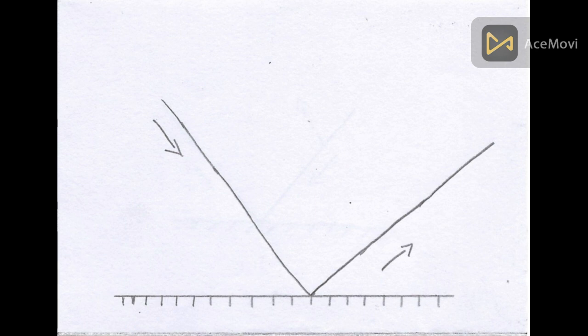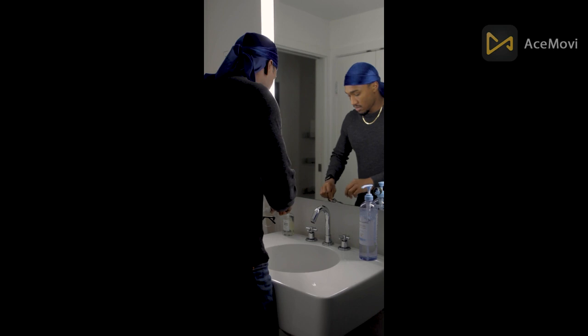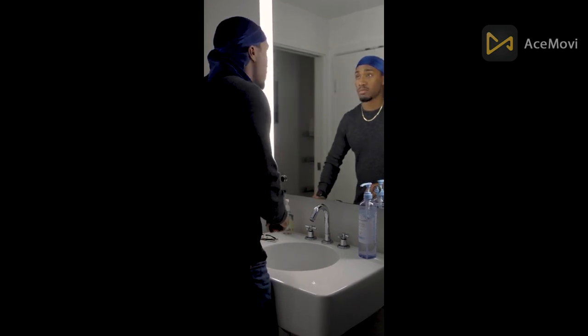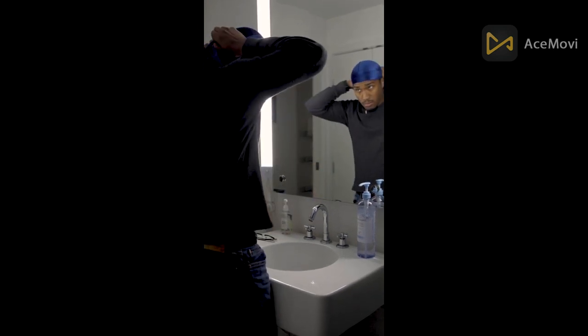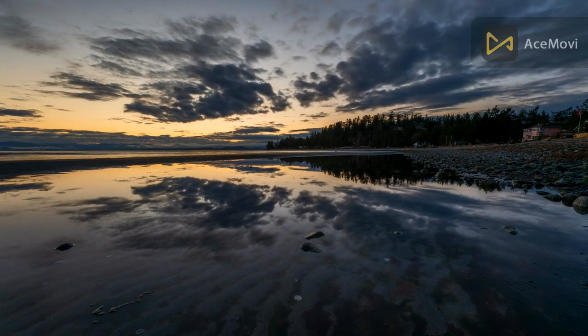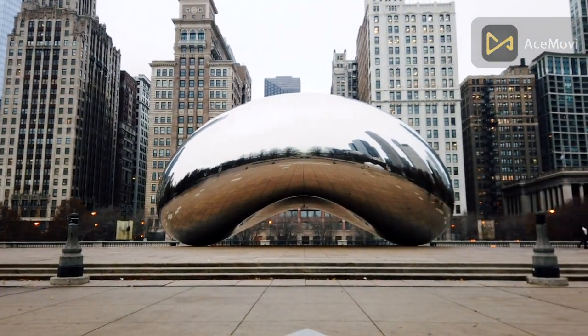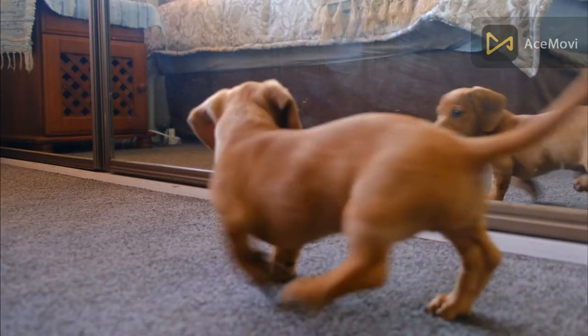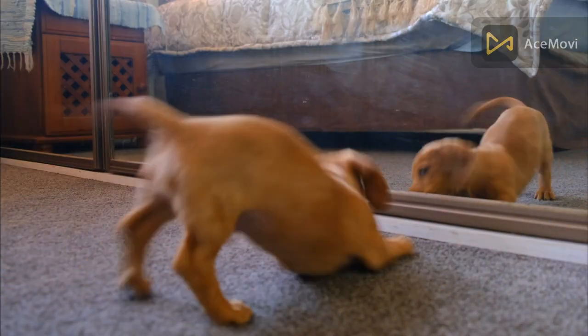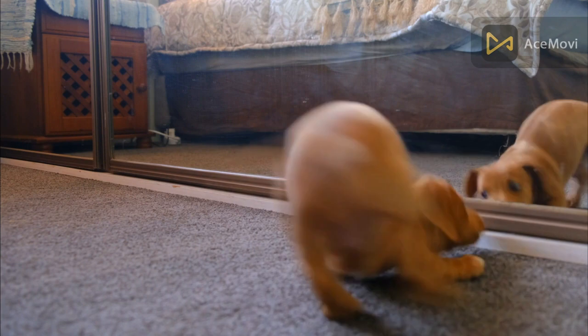We can clearly see reflection in our daily life with the help of mirrors. Sometimes reflection can also be seen on still water or a shiny surface. Now let us know what are mirrors. Mirrors are smooth surfaces which cause clear reflection of light.